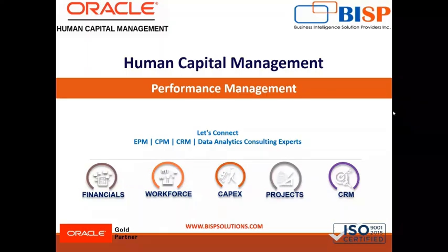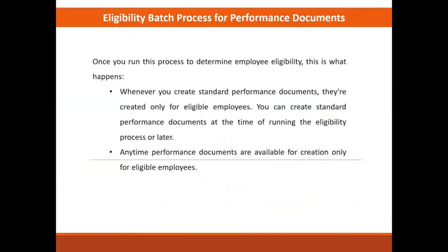Hello everyone, welcome to BISB Solution. Today we are going to talk about the eligibility batch process for the performance document, how the batch process works, and then we can run the eligibility batch process. You can run the eligibility batch process to determine which standard and anytime performance document a population of workers is eligible to use for their performance evaluation. Use the batch process to process eligibility for a specific performance document for all workers in an organization.